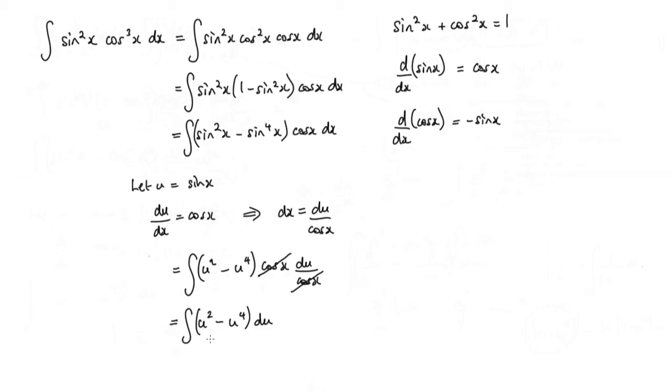Okay, so the integral of u² is u³/3. And we've got u⁴ which will be u⁵/5 plus my constant of integration.